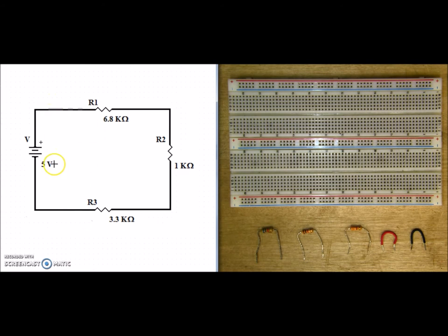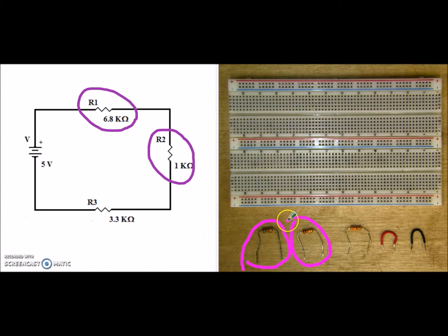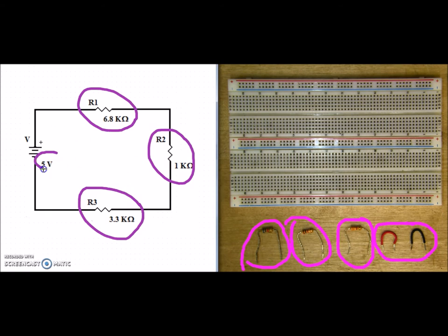First thing we want to do is go ahead and set up our components. R1 is a 6.8k, which I've already gathered. R2 is a 1k, and I have R2 right here. R3 is a 3.3k, and I've gone ahead and found my 3.3k. Additionally, I'll need two jumpers, preferably red and black to indicate positive and negative. Off screen, I have my voltage source set at 5 volts DC.